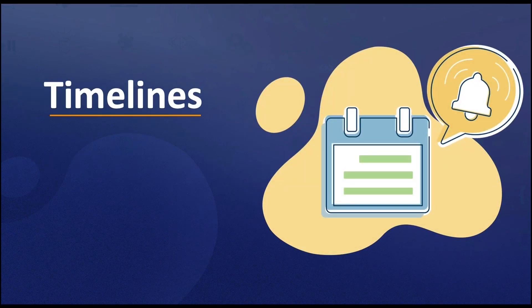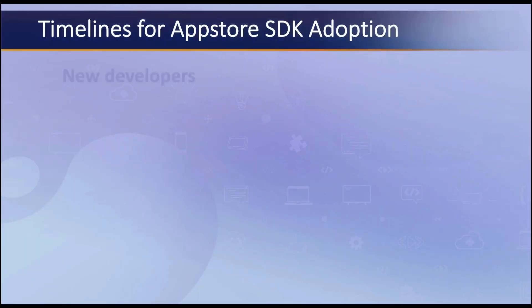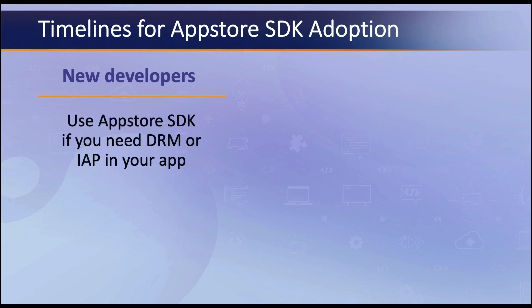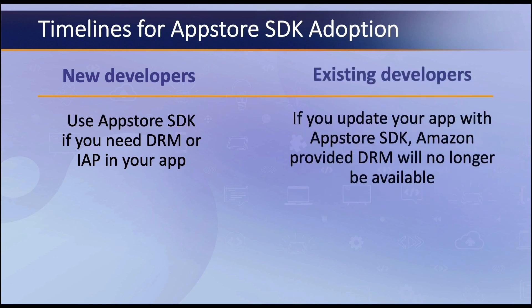This switchover to the new App Store SDK does not need to be immediate and it depends on whether you are a new or existing developer. For new App Store developers, you must use the App Store SDK if you need DRM or IAP in new apps. As an existing developer, the free Amazon Managed DRM will no longer be available if you update your app to use the App Store SDK. To incorporate DRM, you will need to use the DRM API available in the new SDK.